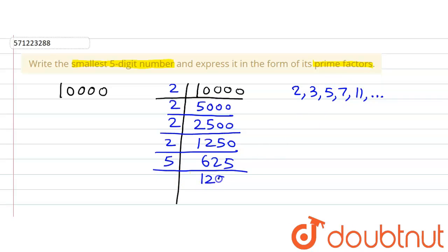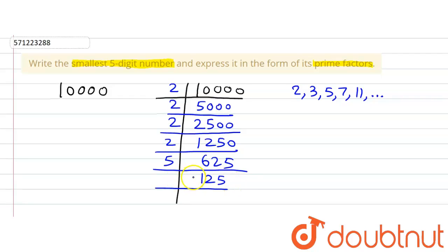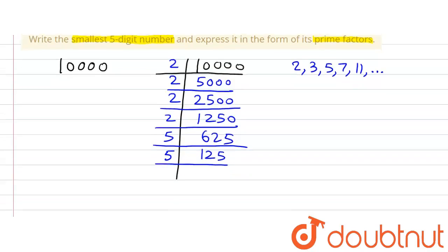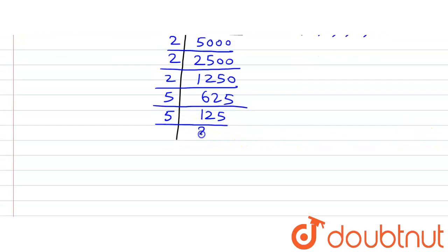625 ÷ 5 = 125, since 5 × 125 = 625. Now 125 is divisible by 5, so 125 ÷ 5 = 25.